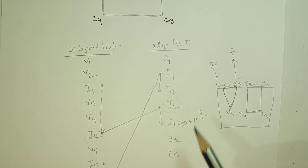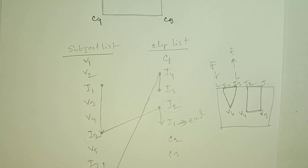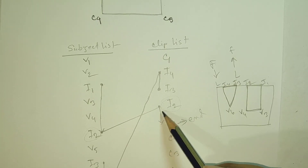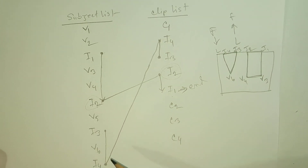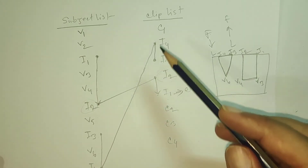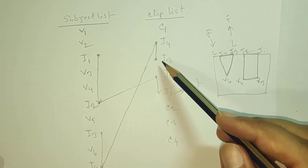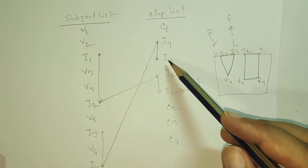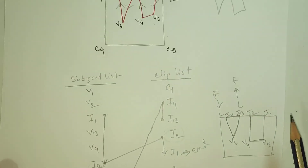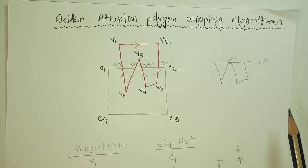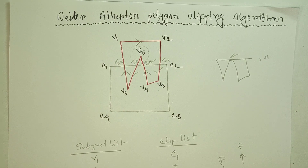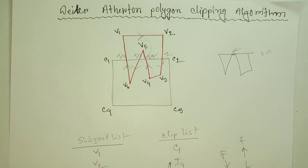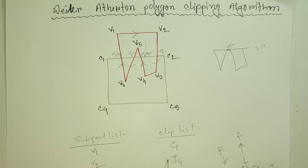This clipping window works in the same way, and the intersecting points — I1, I3, I4 — are identified in the same way. This is the Weiler-Atherton Polygon Clipping Algorithm. If you like, share, and comment on the video and subscribe to the channel. Thank you.